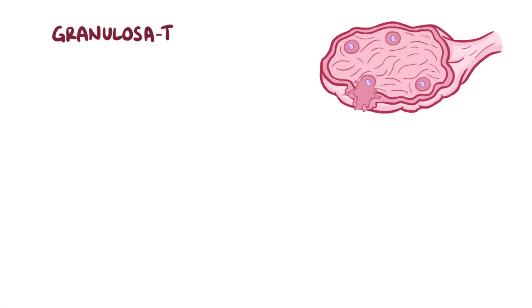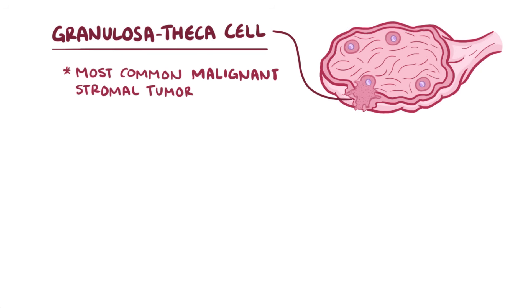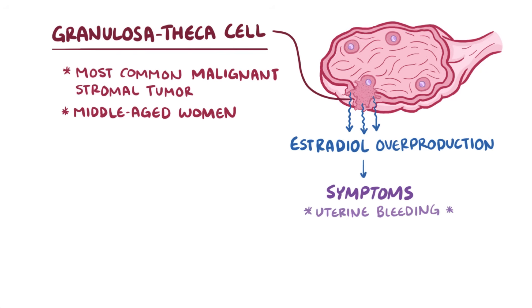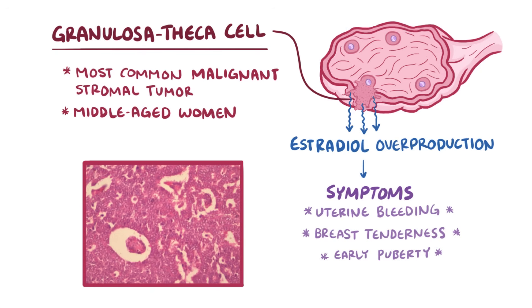The first main type of sex cord stromal tumor is a granulosa theca cell tumor. These are the most common malignant stromal tumors and are associated with middle-aged women. These tumors often end up producing way too much estradiol, and this can cause very specific hormone-associated symptoms like uterine bleeding, breast tenderness, and early puberty in young girls. Under the microscope, these tumors classically develop little fluid pockets scattered throughout the tissue that are called Call-Exner bodies.